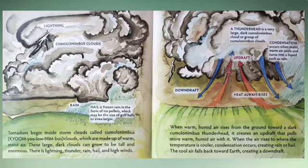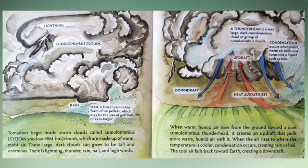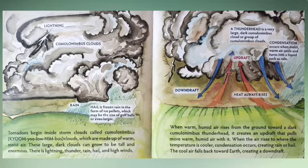These large dark clouds can grow to be tall and enormous. There is lightning, thunder, rain, hail, and high winds. When warm, humid air rises from the ground toward a dark cumulonimbus thunderhead, it creates an updraft that pulls more warm, humid air with it. When the air rises to where the temperature is cooler, condensation occurs, creating rain or hail.